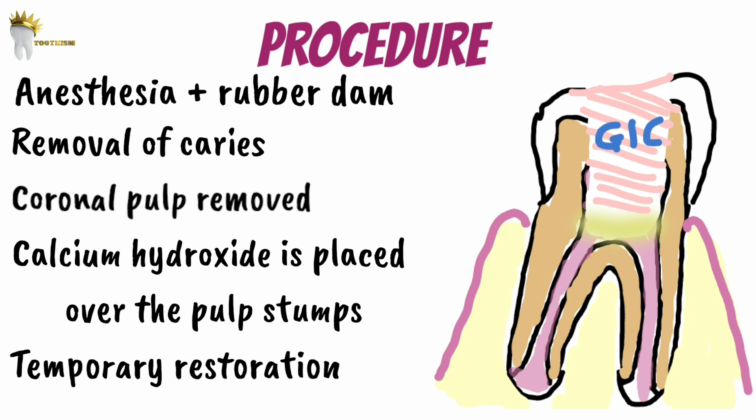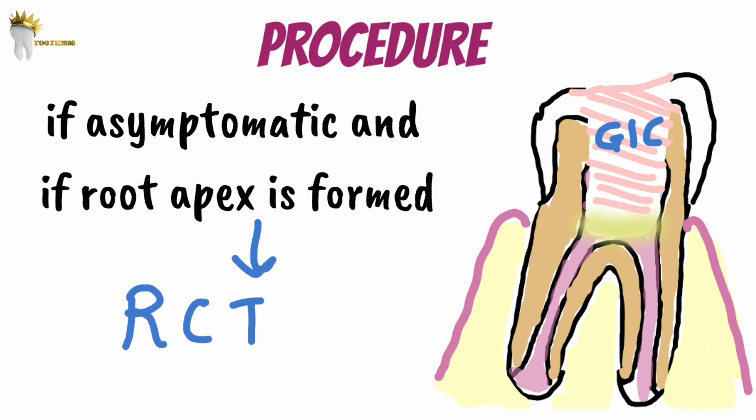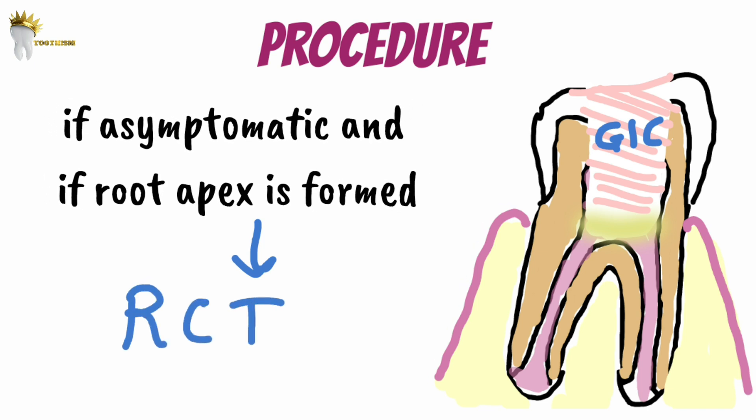Once this is done, the work is still not over. Follow-up radiographs must be taken regularly to check for root development, as that is the rationale of this treatment. This can be done at intervals of three months. Once the root apex is formed, one can proceed with conventional root canal treatment. At this point, it is also important to check that the tooth is asymptomatic.